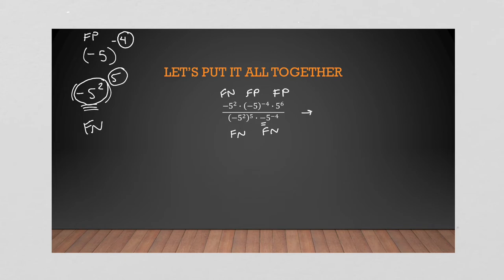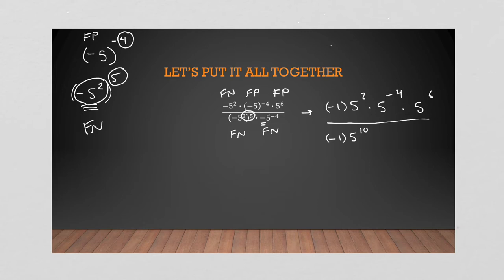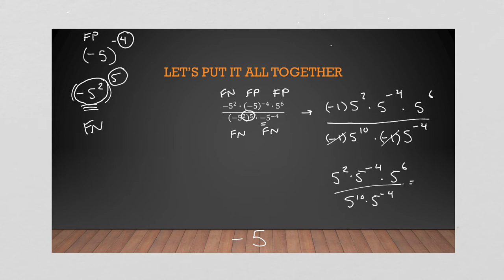So we have negative one times five squared — forever positive — and just five to the six. On the bottom we get a forever negative, then five to the ten from the power-to-a-power, then negative one, then five to the negative four. Two negative ones cancel — goodbye, goodbye — leaving one negative, so we'll have a negative answer. Our base is five. Five to the two times five to the negative four times five to the six, all over five to the ten times five to the negative four. On top: two plus negative four plus six is four, so five to the four. On the bottom: five to the six. Subtracting: four minus six is negative two.